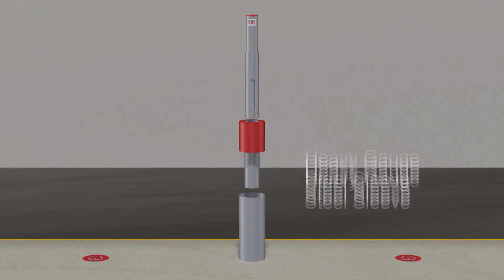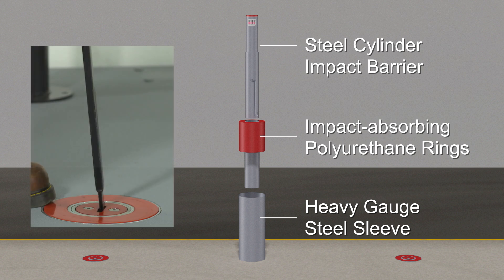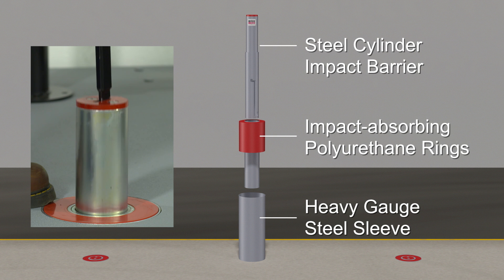The durable design includes a heavy-gauge steel sleeve, impact-absorbing polyurethane rings, and a steel cylinder impact barrier that can be raised and lowered, assisted by a gas spring.